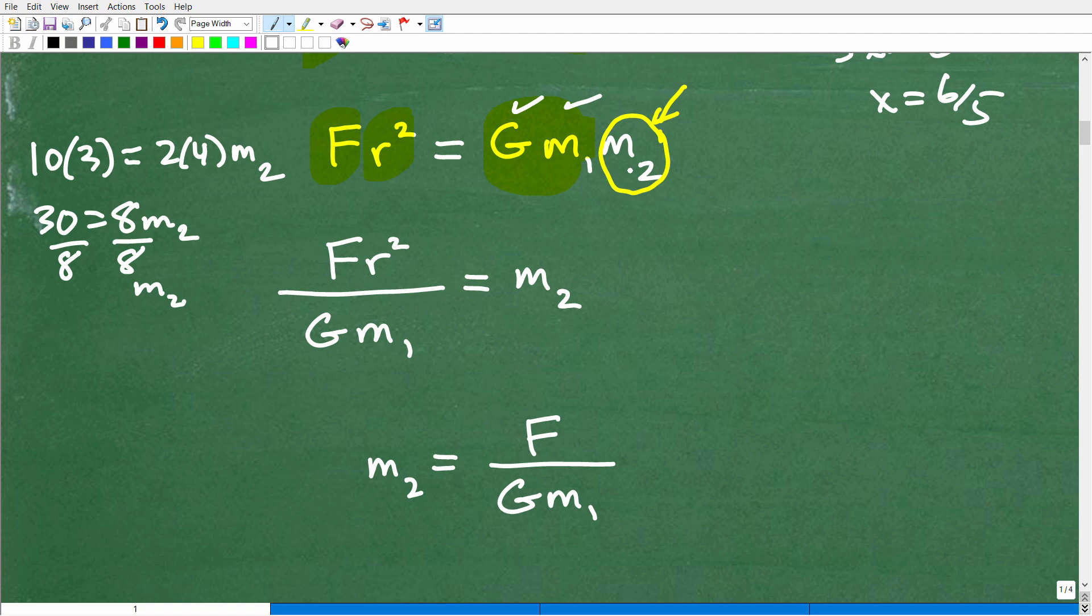So I have this to get my m2 by itself. All I need to do is divide both sides of the equation by G times m1. And there you go. That's it.